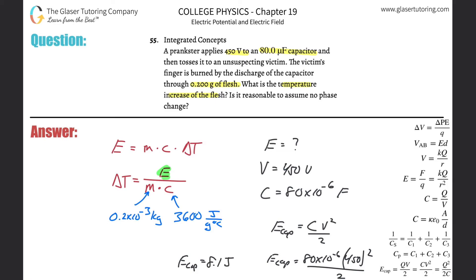Now, this represents the energy. If this is the energy that's stored in the capacitor, I guess we're going to assume all of this energy gets transferred into then raising the temperature of the skin, or the flesh, and that's what we're going to try to solve for now. So change in T will equal 8.1 divided by 0.2 times 10 to the minus 3, multiplied then by 3600.